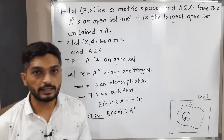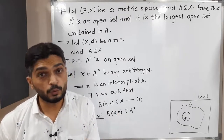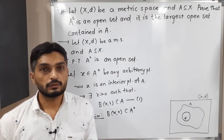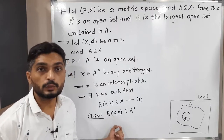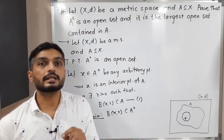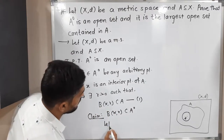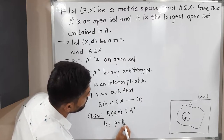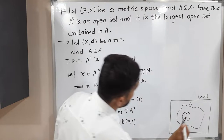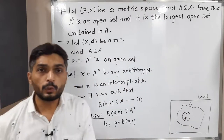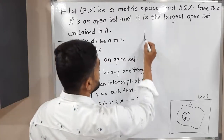Then only we can declare it is an open set. How to prove B(x, r) ⊆ A interior? That means how to prove one set is a subset of another. The technique is: we take one arbitrary point from the first set and prove that it is in the second set — then we can say the first set is a subset of the other. So let us take one point. Let p belong to B(x, r). But we know that every open ball is an open set, so we can declare B(x, r) is an open set.